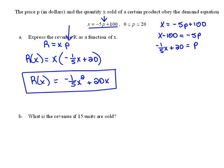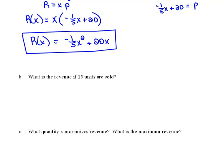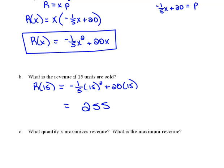Now part B says, what is the revenue if 15 units are sold? Well, we have our revenue function, so we can now go ahead and evaluate that at 15. So that would be negative 1 fifth times 15 squared plus 20 times 15. And using your calculator, if you need to pause the video, you can. We should get $255 for the revenue if we sell 15 items.